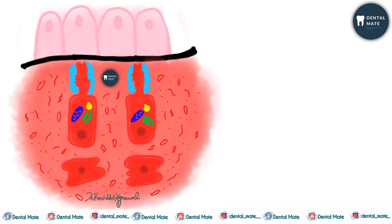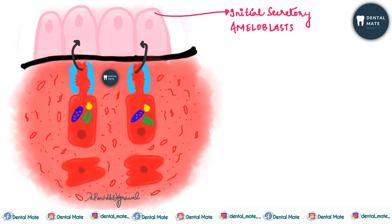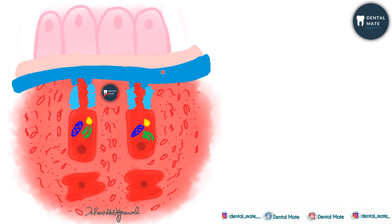The odontoblasts with the predentine layer continue to grow. The ameloblasts differentiate into initial secretory ameloblasts and lay down the enamel matrix. Along with that, dentine formation continues. As the matrix formation proceeds, the odontoblast processes lengthen along with the dentinal tubules.